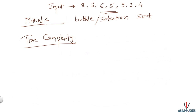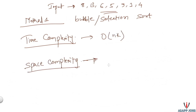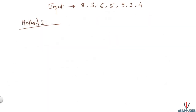Now let's calculate the time complexity. Since we iterate k times and each iteration goes through n elements, the total time complexity is O(n·k). For space complexity, bubble and selection sort are in-place sorting algorithms, so the space complexity is O(1) constant.